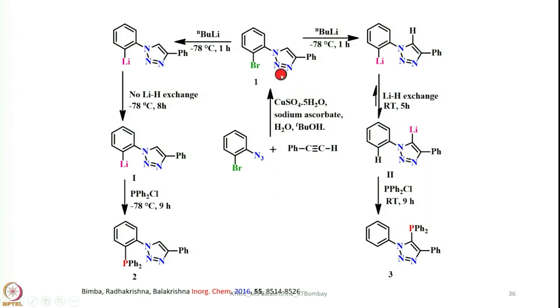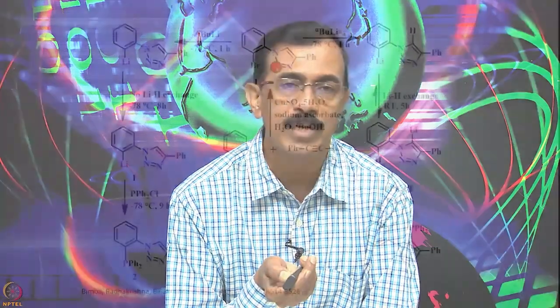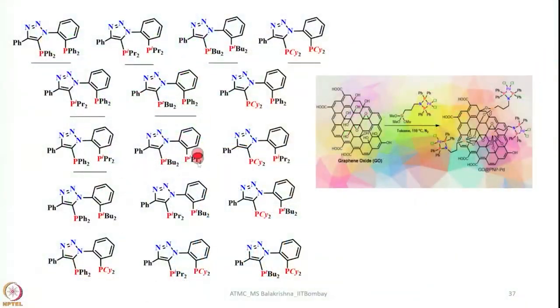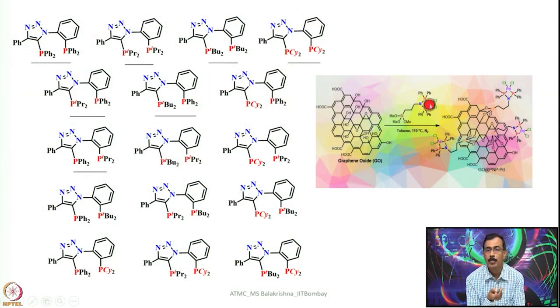When chlorodiphenylphosphine is added after warming, phosphination occurs on the triazolic carbon. This was discovered when one of my students was working on this system, and we investigated it in detail using spectroscopic methods and kinetics, concluding it is a very temperature-dependent reaction. Once we understood this, we generated a series of phosphines and also immobilized them on a heterogeneous surface such as graphene oxide, making it very convenient to perform catalysis.